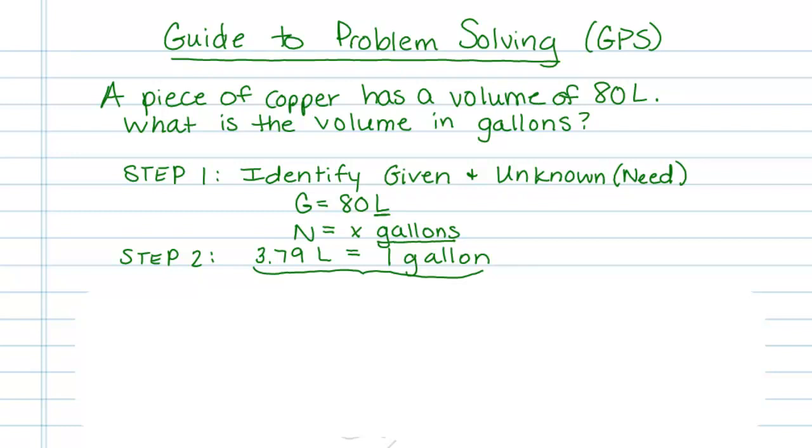Sometimes this happens in one step, like in this example. Other times, it may take multiple steps. In other words, you have to have multiple equalities and multiple conversion factors.